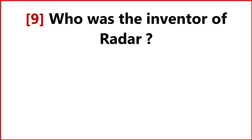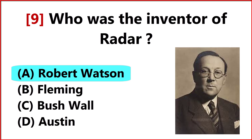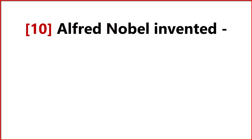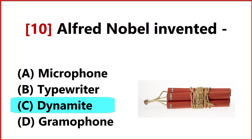Who was the first inventor of radar? Answer Option A: Robert Watson. Alfred Nobel invented Answer Option C: Dynamite.